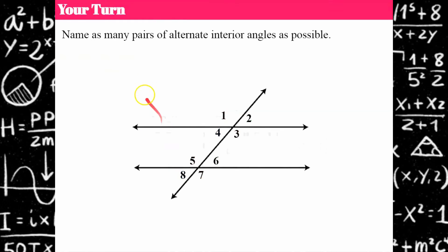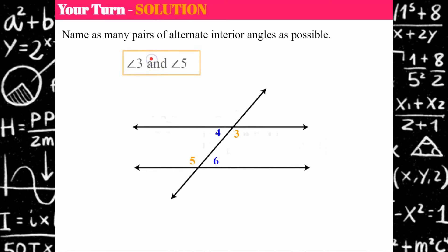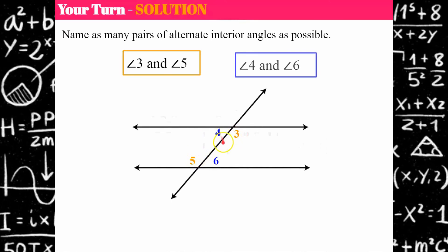Now name all the pairs of alternate interior angles. Go ahead and pause and come back when you're ready. We have two pairs: angles 3 and 5, and angles 4 and 6. Two pairs of alternate interior angles.